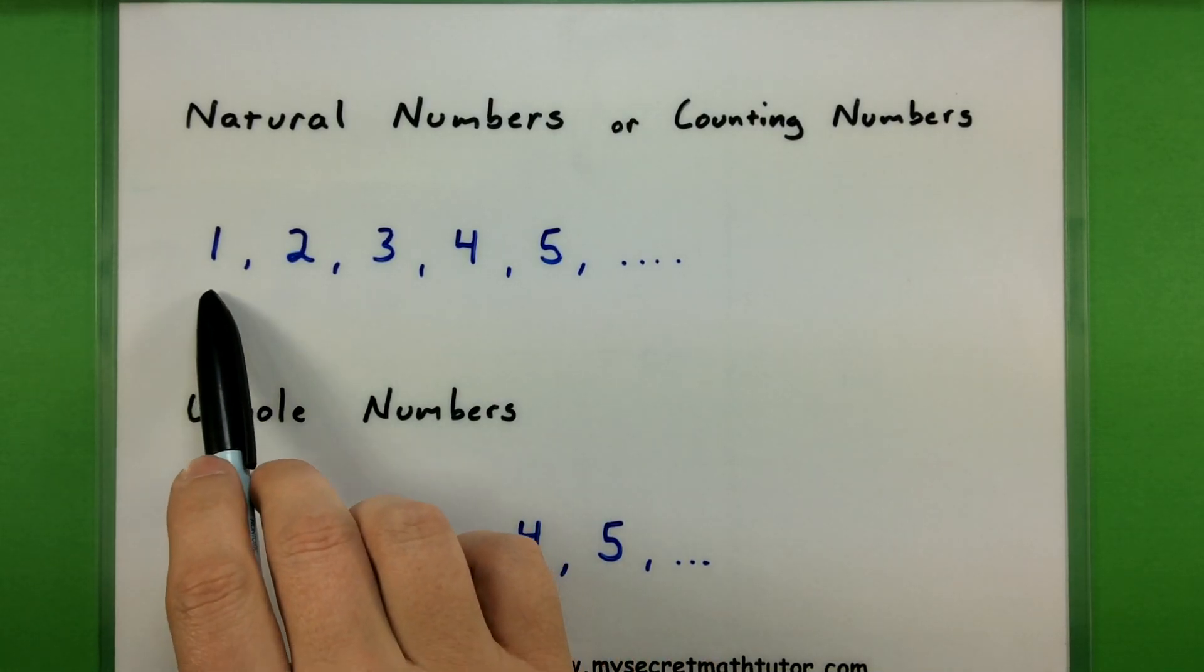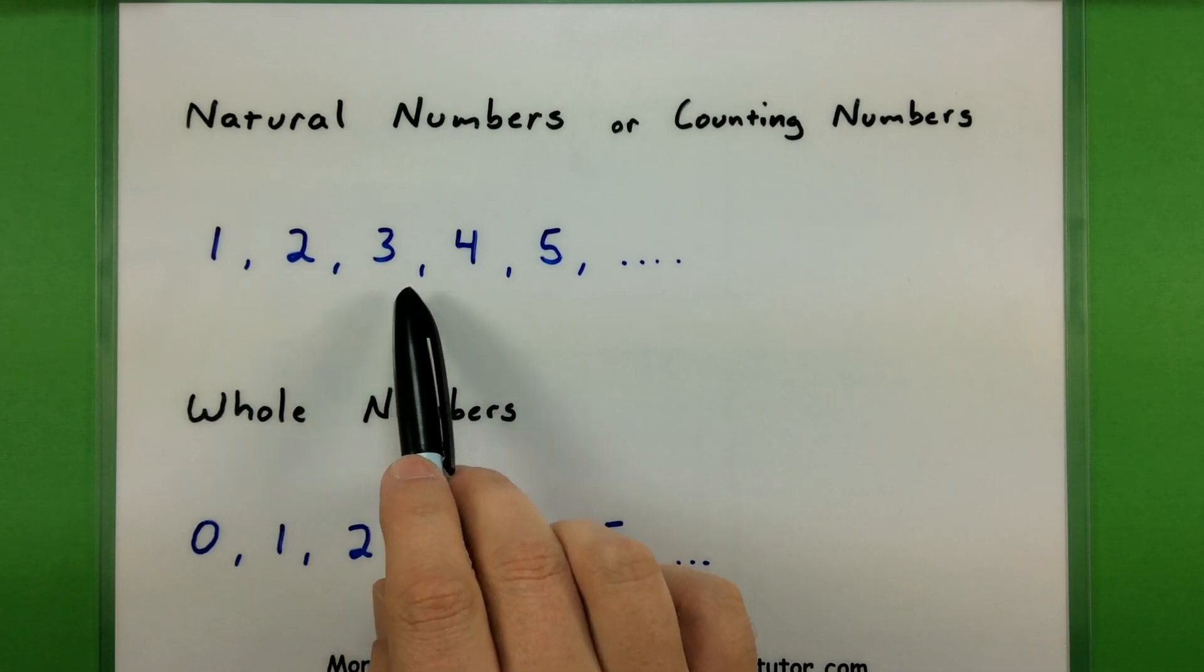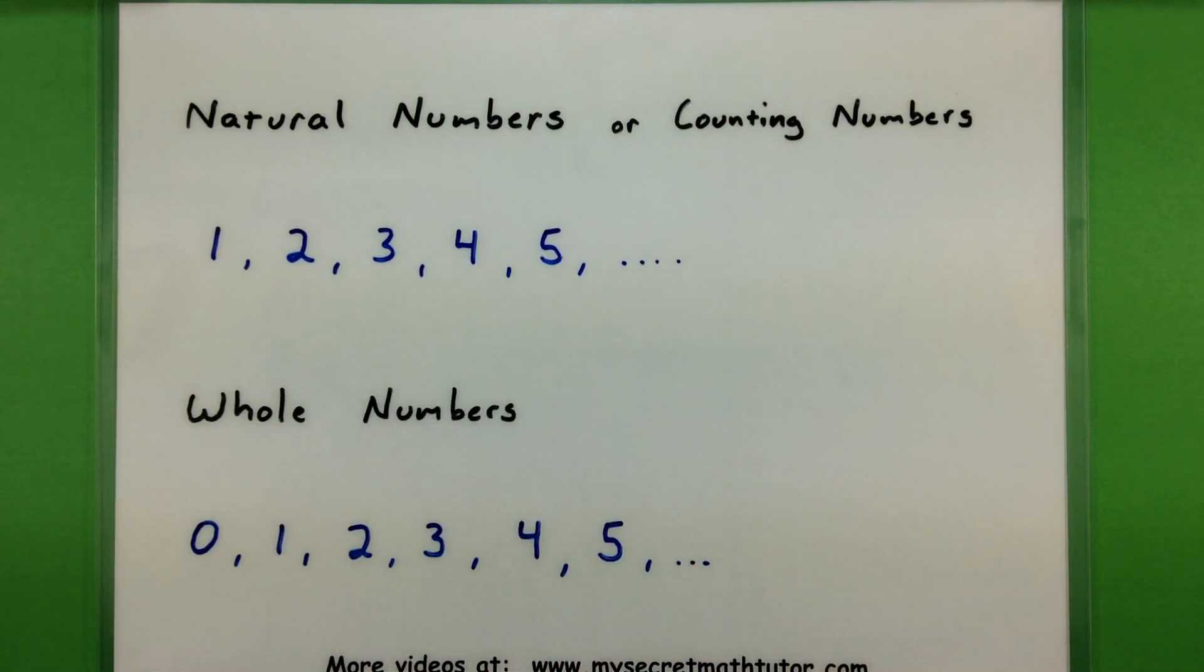These are the familiar numbers of 1, 2, 3, 4, 5, and really they just keep going after that. They're called your counting numbers because they're the ones you usually start counting with.